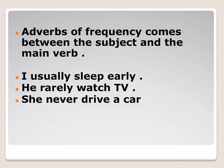Adverbs of frequency come between the subject and the main verb if we don't have the verb 'to be'. For example: 'I usually sleep early.' We have subject, then adverb of frequency, then verb. More examples: 'He rarely watches TV.' 'She never drives a car.'